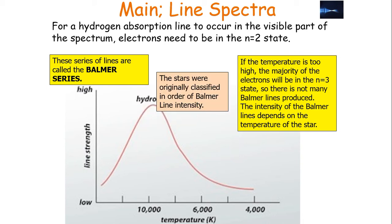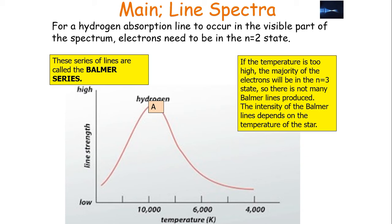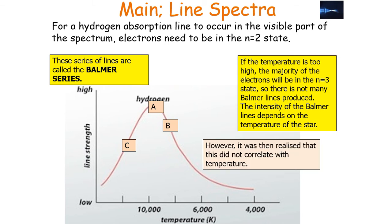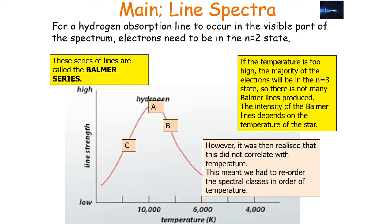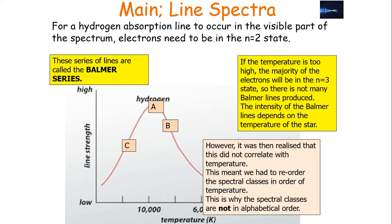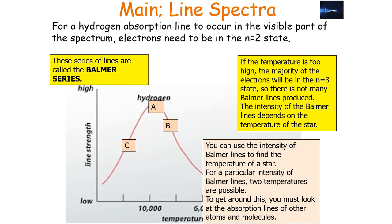Stars were originally classified in order of Balmer line intensity, so A was the most intense lines, then B and C corresponding to line strength. However, it was later realized that this didn't correlate with temperature due to the n=1 and n=3 issue. By this point, the spectral class system had already been established, so the spectral classes had to be reordered by temperature — meaning they are no longer in alphabetical order. This is why the spectral classes are not in alphabetical order.